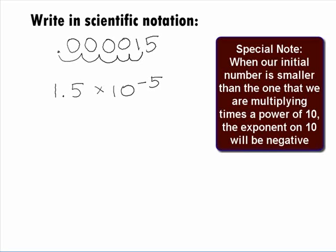Note how the number we started with is a smaller number than the one we are multiplying by in the scientific notation. When that is the case, we will end up with a negative exponent.